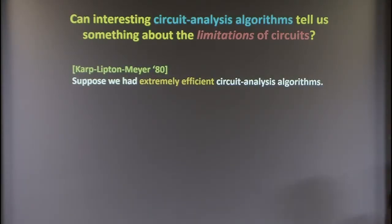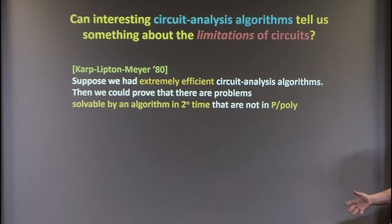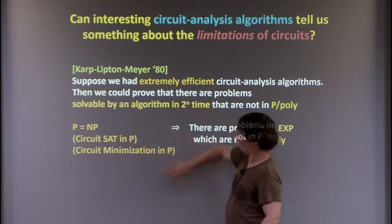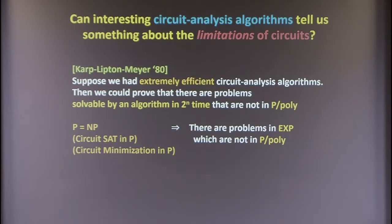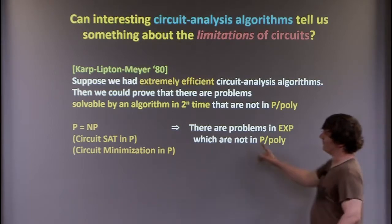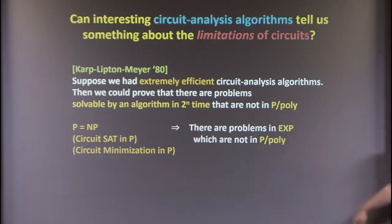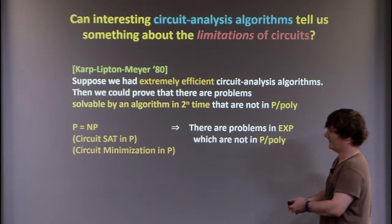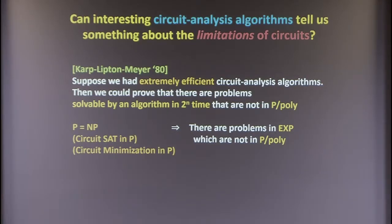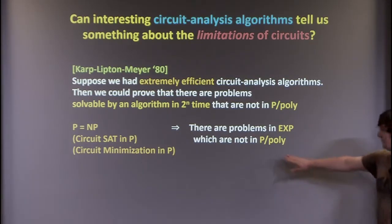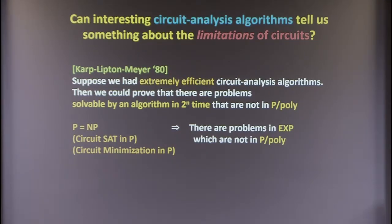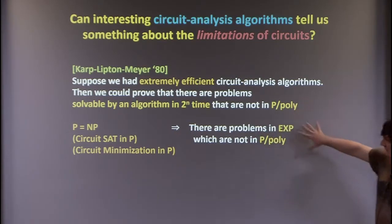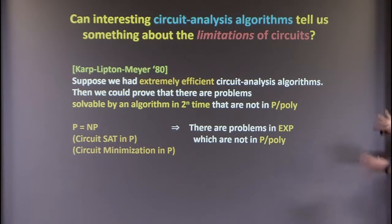A theorem of Karp, Lipton, and Meyer that was mentioned can be seen in the following light: suppose we had extremely efficient circuit analysis algorithms — suppose P equals NP, so we can solve circuit SAT in polynomial time. Then we could prove there are problems solvable in 2^n time that are not in P/poly. If P equals NP, you have perfect circuit analysis algorithms, and then you can find functions in exponential time that can't be in P/poly.